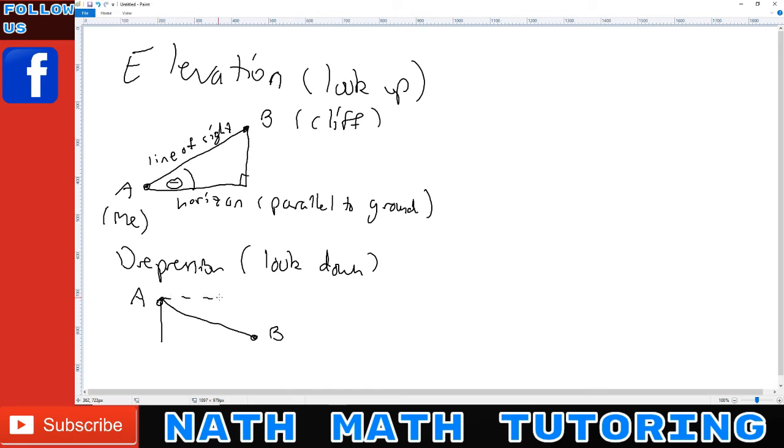So the horizon is this line here, which if I connect this diagram, is parallel to the ground. Alright, this is the ground. So this angle here, between the line of sight and the horizon, is the angle of depression.